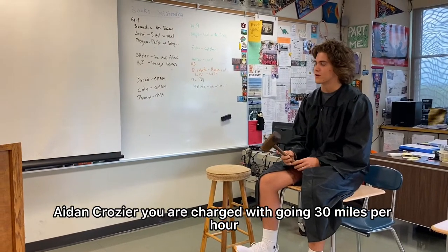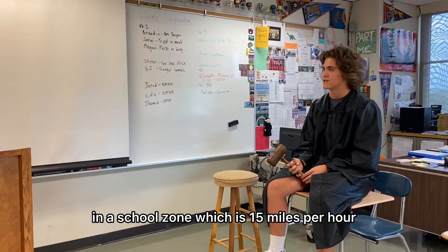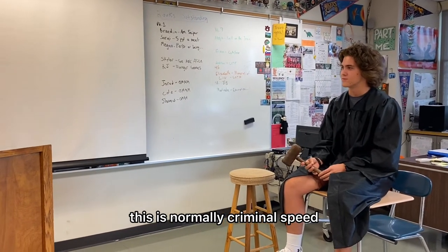Aiden Cranger, you are charged with going 30 miles per hour in a school zone, which is 15 miles per hour. This is normally criminal speed. What do you have to say about it?